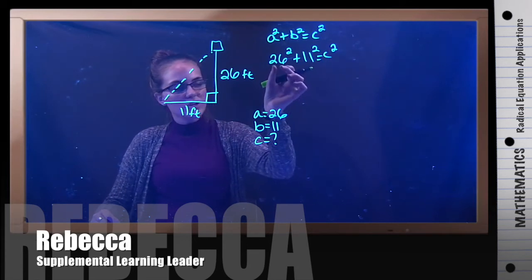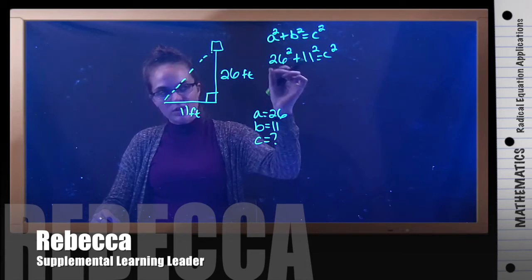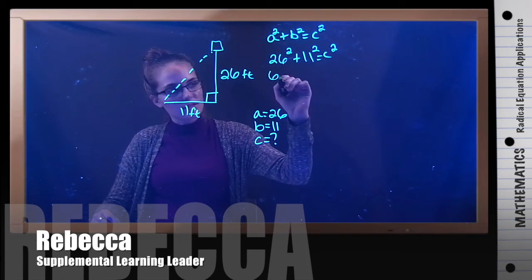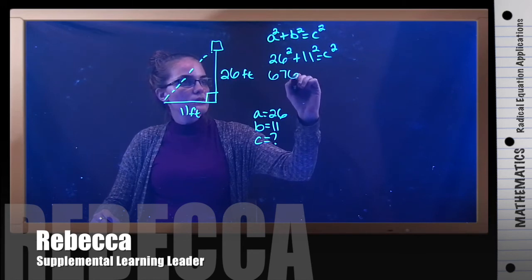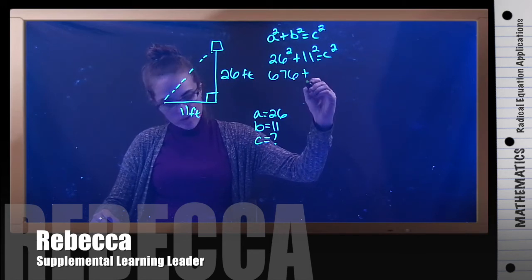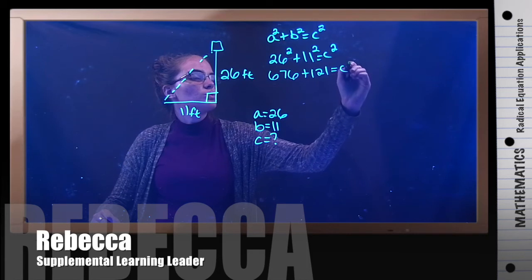Now, we know that 26 squared, if you put that in your calculator, you can figure out that that is 676. Plus 11 squared is 121, equals c².